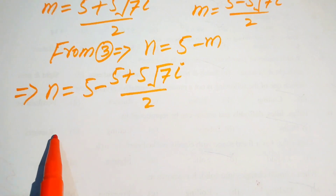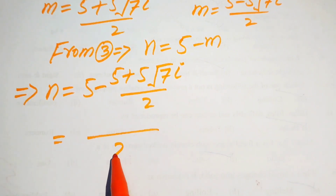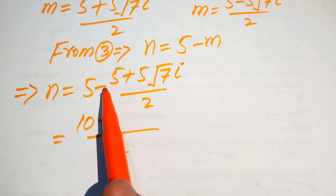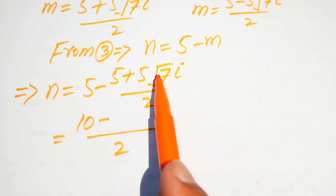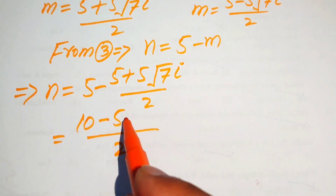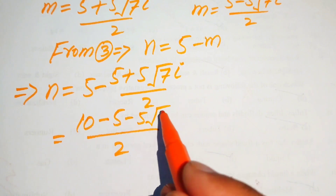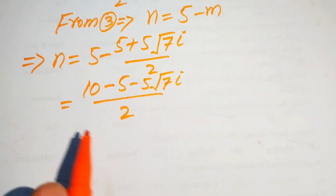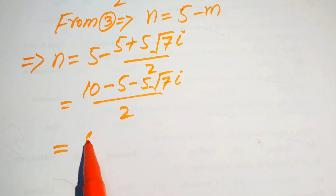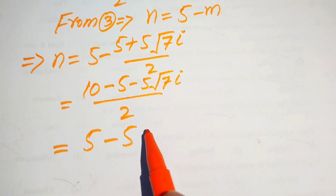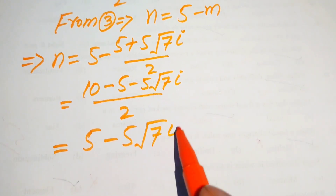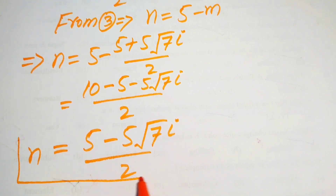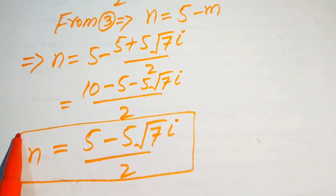Taking the LCM, we get (10 minus 5 minus 5√7·i) divided by 2. Simplifying, 10 minus 5 is 5, so n equals (5 minus 5√7·i) divided by 2.